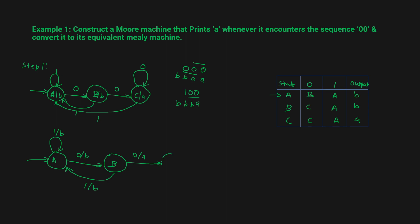Now in state C, what happens? You are in state C and get input 0 — you go to state C where the output is going to be 'A'. And if you get input 1, you go to state A where the output is going to be 'b'.